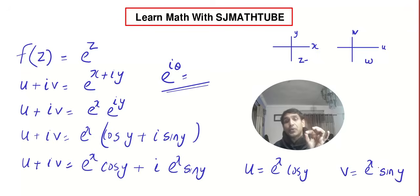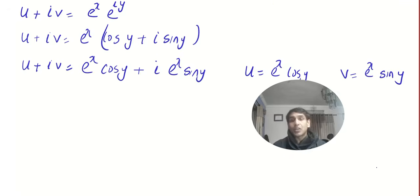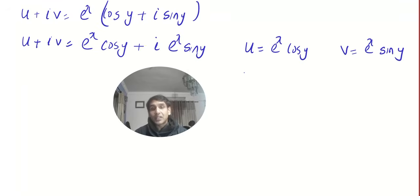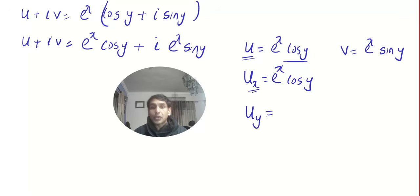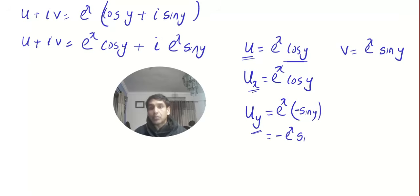Pause the video and recall the Cauchy-Riemann equation. We find all the partial derivatives. For ux, differentiate u treating x as the variable and y as a constant — the derivative of e^x is e^x, so ux = e^x·cos y. For uy, treat y as the variable — the derivative of cos y is minus sin y, so uy = −e^x·sin y.